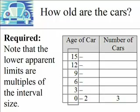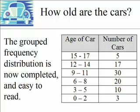Then you can finish creating your grouped frequency distribution. As you look at it, you can see that the lower apparent limits are all multiples of 3, making the table much easier to read. It starts with 0 to 2 and goes all the way up to 15 to 17. The oldest car was actually only 16, but we go to 17 because our interval size is 3. You list all the class intervals beginning with the smallest, 0 to 2, all the way up to 15 to 17.